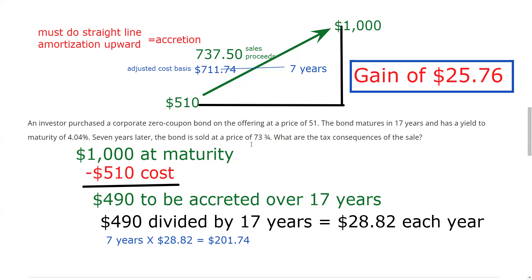I don't think you'll have to do this practical calculation on your test, but recognition concepts are very testable: when you buy a zero coupon bond you must do straight-line amortization upward called accretion; the accreted adjustment is taxable unless it's a muni OID or zero; they're good for someone who wants to lock in a rate of return; they have no reinvestment risk. One more testable point — zero coupon bonds are very volatile with interest rates. A 17-year zero is going to be much more volatile than a 17-year muni bond with coupon income.